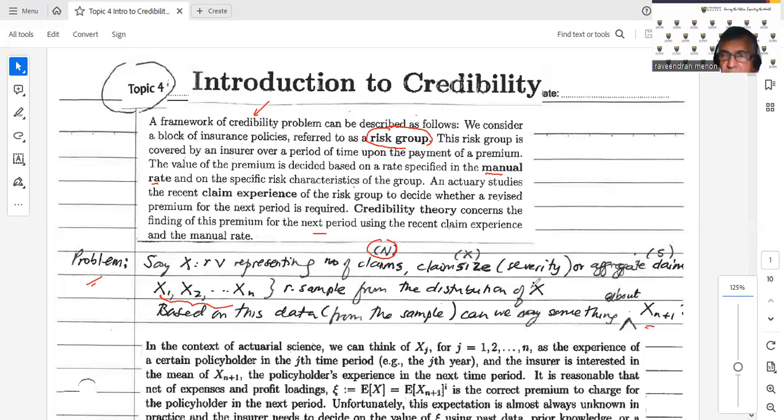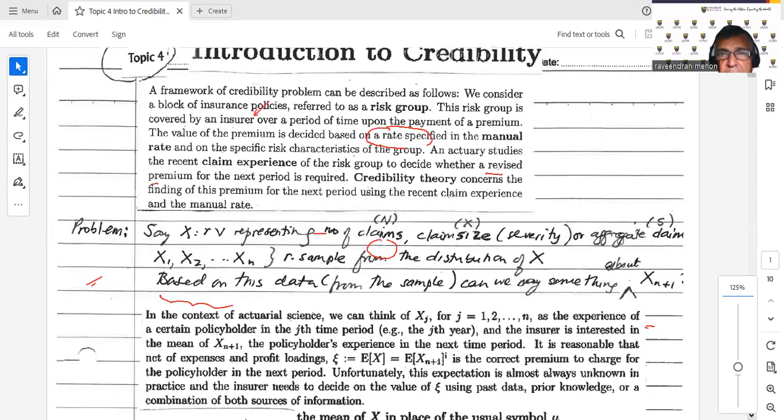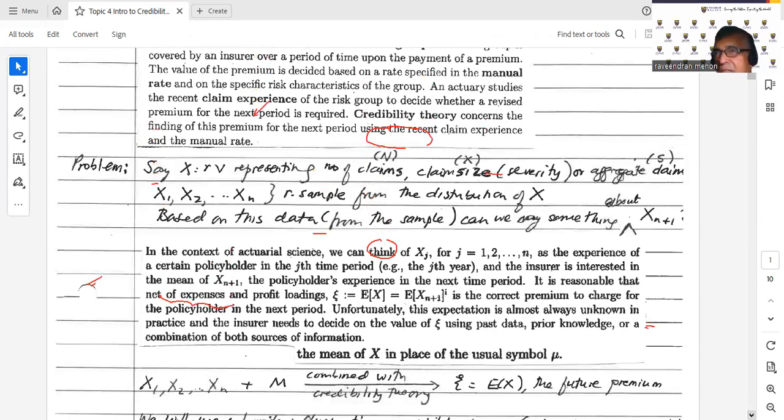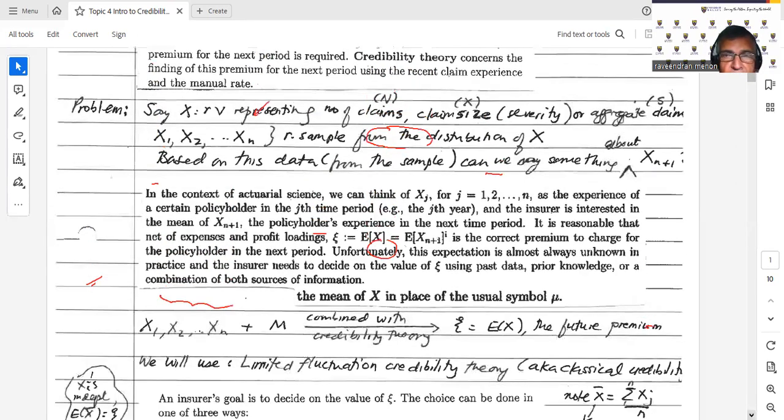All right. So now let's move on. This is just a build-up to what we need. We're just saying, look, we have a manual rate and then what we want to do is give some value to the recent claim experience and then we arrive at our next premium or next predicted value of the number of claims or S or whatever.